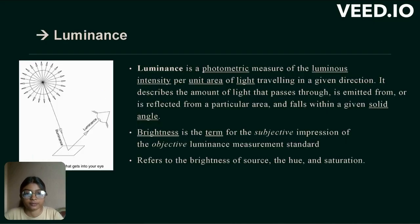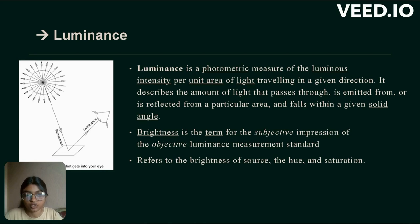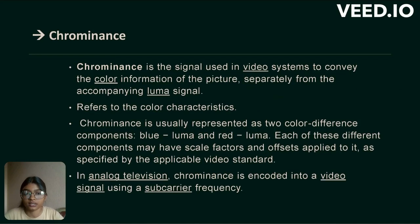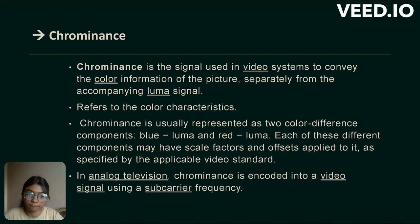Luminance is a photometric measure of luminous intensity per unit area of light traveling in a given direction. It describes the amount of light that passes through, is emitted from, or is reflected from a particular area within a solid angle. Brightness is the subjective impression of the objective luminance measurement. Chrominance is a signal used in video systems to convey the color information of a picture separately from the accompanying luma signal. Chrominance refers to color characteristics and is usually represented as two color-difference components: blue luma and red luma. In analog television, chrominance is encoded using a subcarrier frequency.